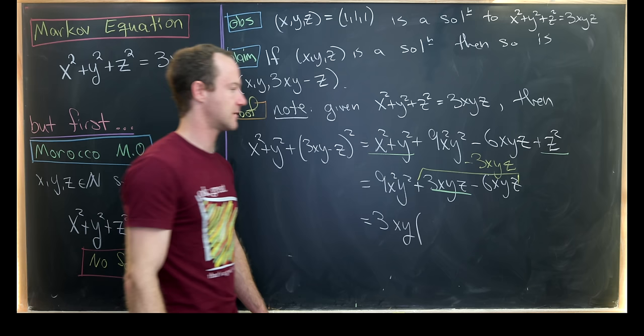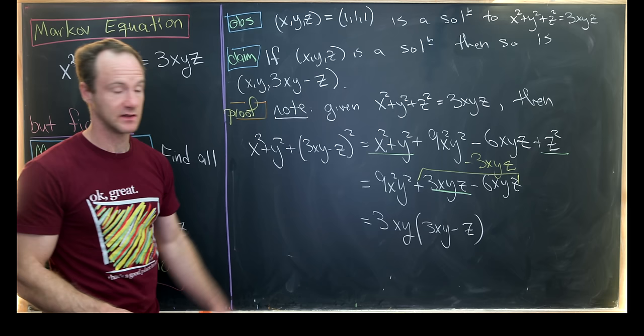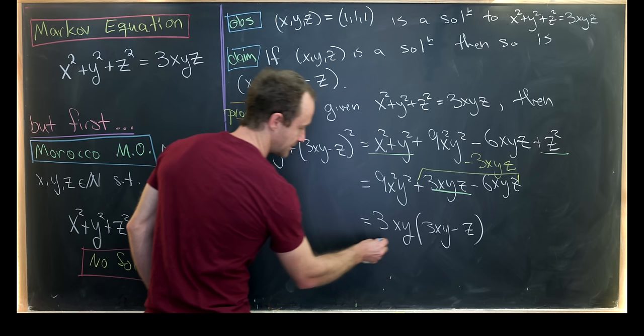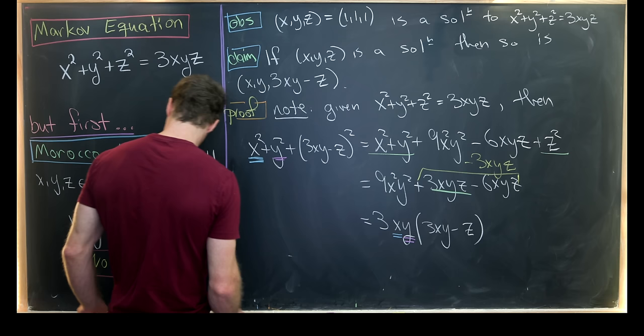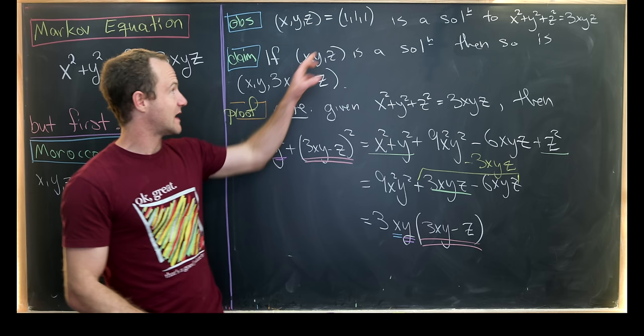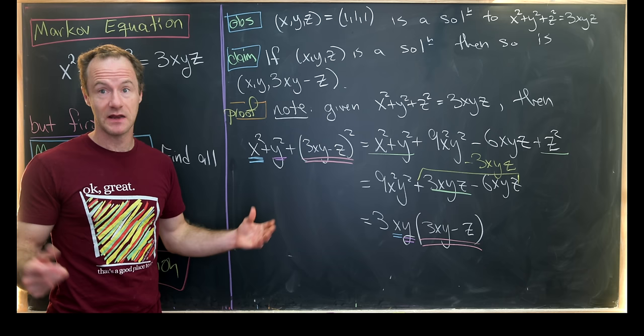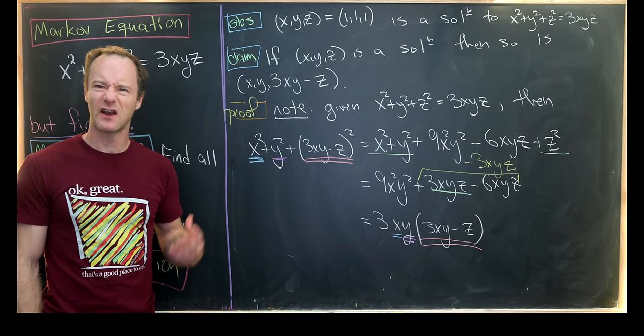Let's maybe underline this in green to color code that those terms in the previous step combine together to give us 3XYZ. But now we can do a little bit of symbolic manipulation. This simplifies to -3XYZ and then we can factor some stuff out. We can factor a 3XY out. So let's factor a 3XY out and then observe that we're left with 3XY - Z. But comparing that with the left-hand side we see that we have X² and then an X here. We have a Y² and then a Y here and then we have this object (3XY - Z)² and then the object not squared over here shows us that this new triple is a solution.